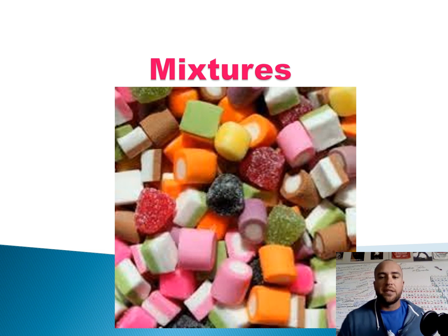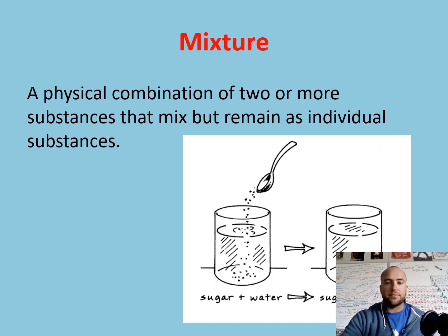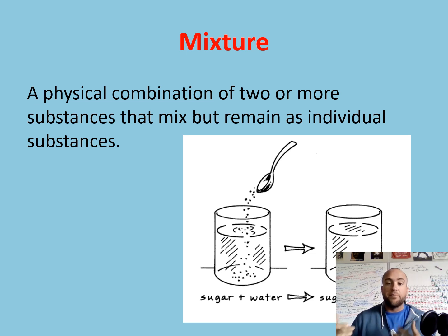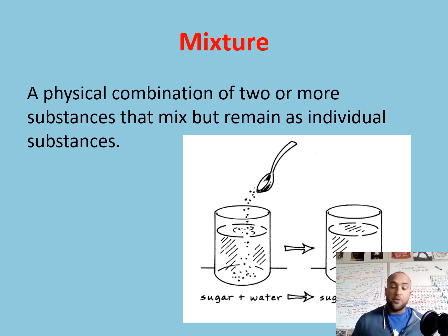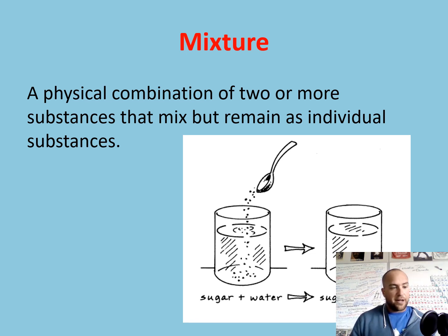We're talking about mixtures, and mixtures are quite simple — it's our last piece of the puzzle for all matter when talking about compounds and molecules. What is a mixture? A mixture is just a physical combination — putting two things together. Remember yesterday I played with some salt water, and I was able to break up the compound using electrolysis. Salt and water mixed together are a physical mixture. The definition: a physical combination of two or more substances that mix but remain as individual substances. Write that definition down at the top of your paper. A mixture is physically mixed, as opposed to a compound which is chemically stuck.